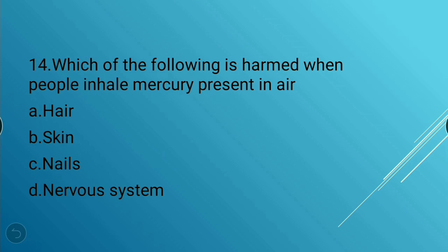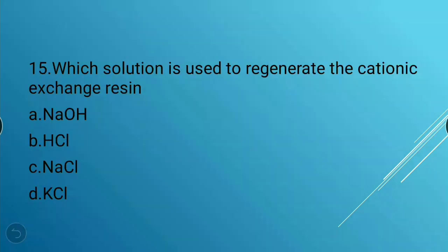Next question: Which of the following is harmed when people inhale mercury present in air? Options: hair, skin, nails, or nervous system. The answer is option D — nervous system. The nervous system is harmed when people inhale mercury.